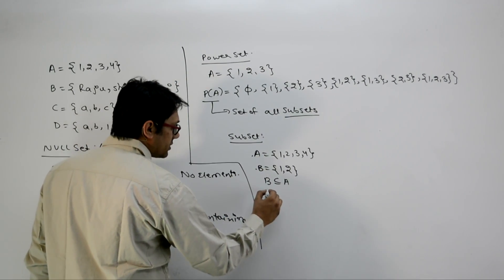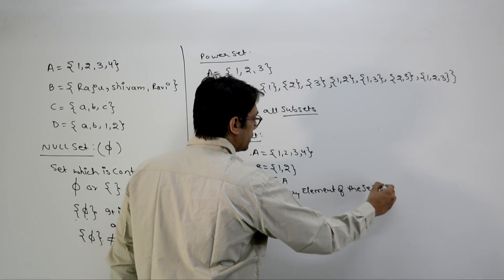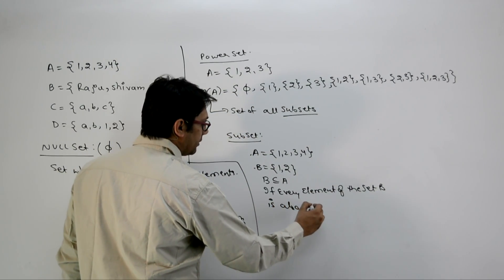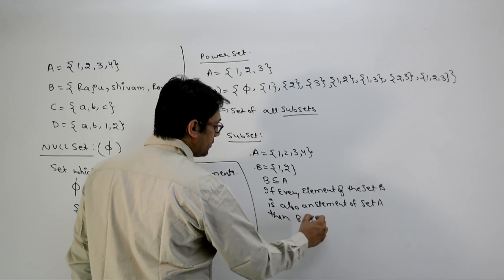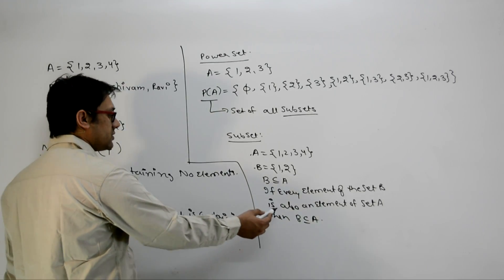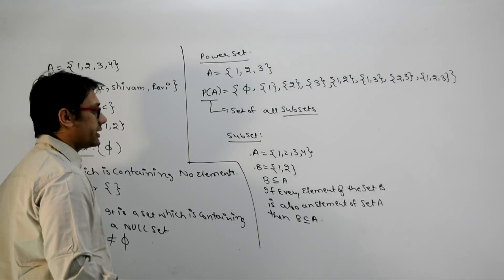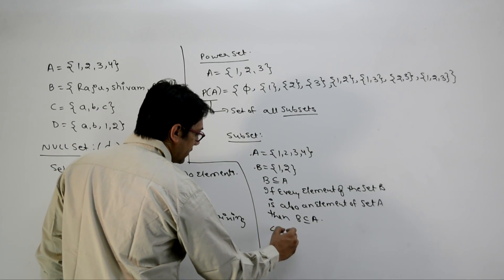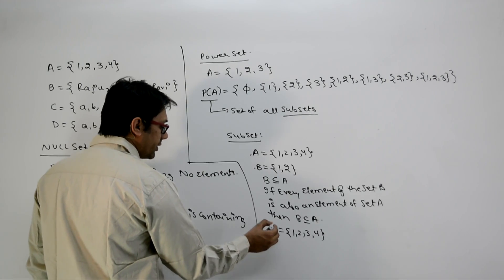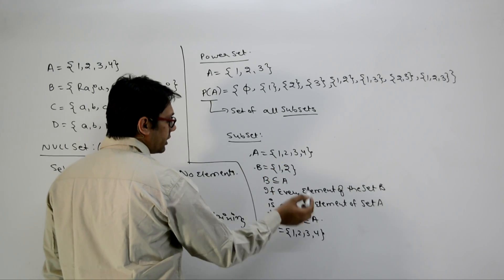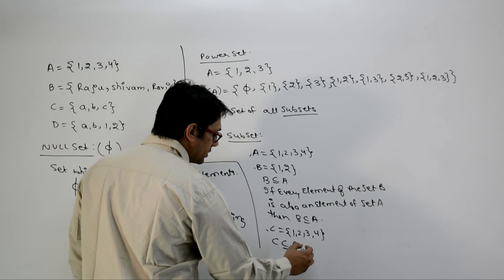There is no restriction that A cannot contain more elements — A can also contain 3 and 4. For example, if set C contains 1, 2, 3, 4, then every element of C is also in A, so C is a subset of A. In this special case, A is also a subset of C.